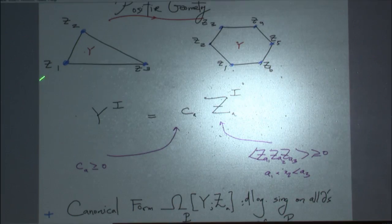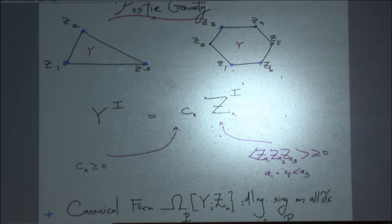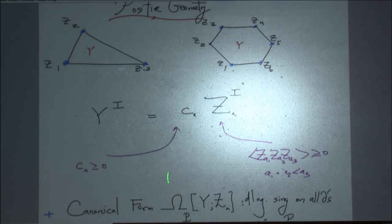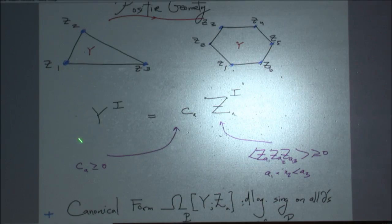What is a positive geometry? The simplest example is like the inside of an interval, or a triangle, or a simplex in a general number of dimensions. More generally, you can imagine the inside of a polygon or a polytope in higher dimensions. One way of talking about these positive geometries: there's a positive linear combination of the external data that specifies the vertices — a formula that specifies a geometric object.